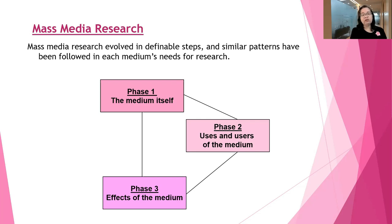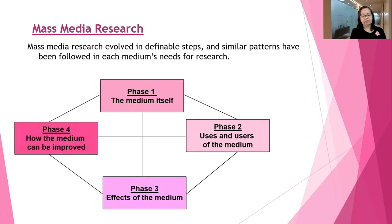The last phase looks at the future of journalism. It determines how the medium can be improved, either in its use or through technological developments. Is there a way to change content or programming to be more valuable or entertaining? How does technology and its developments change people's use of the medium? These and many other questions are what we look at in the fourth phase, especially in projecting the future of journalism.